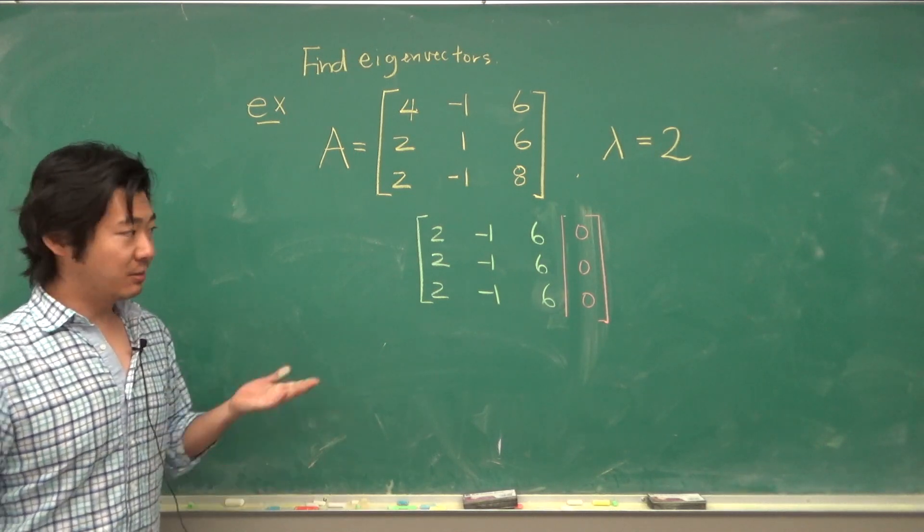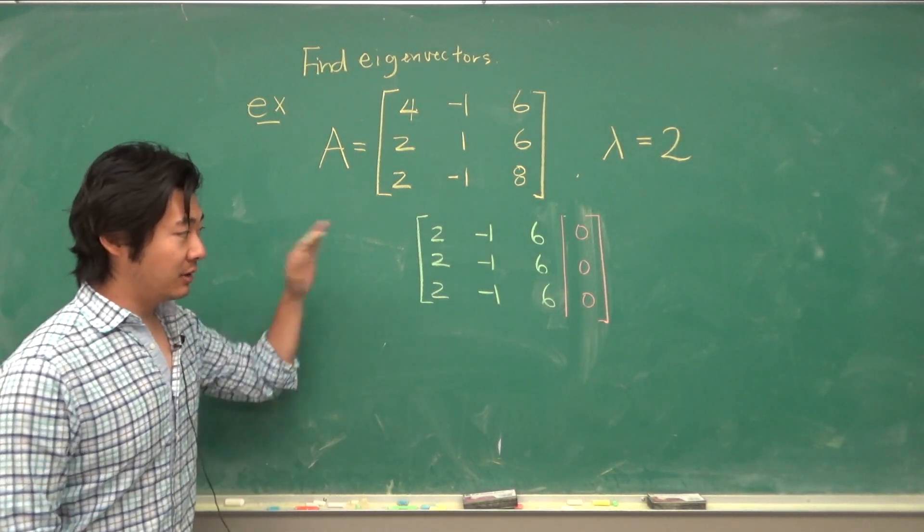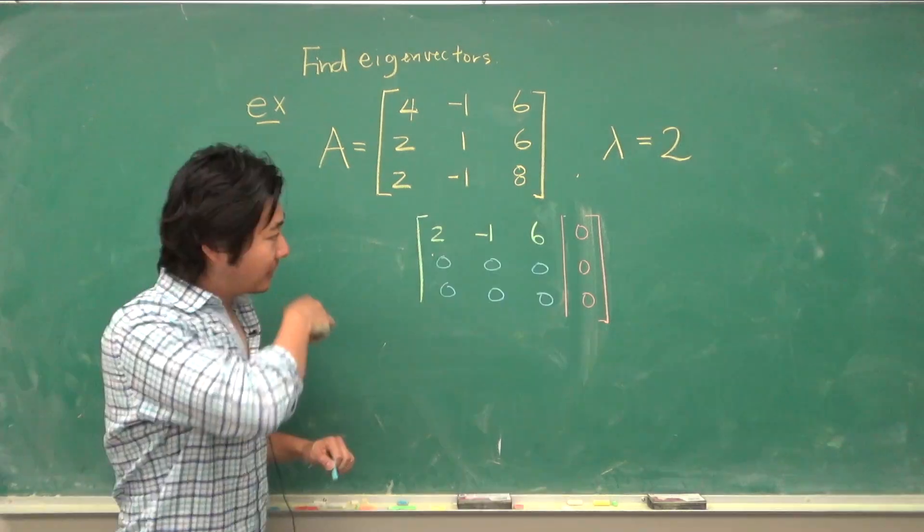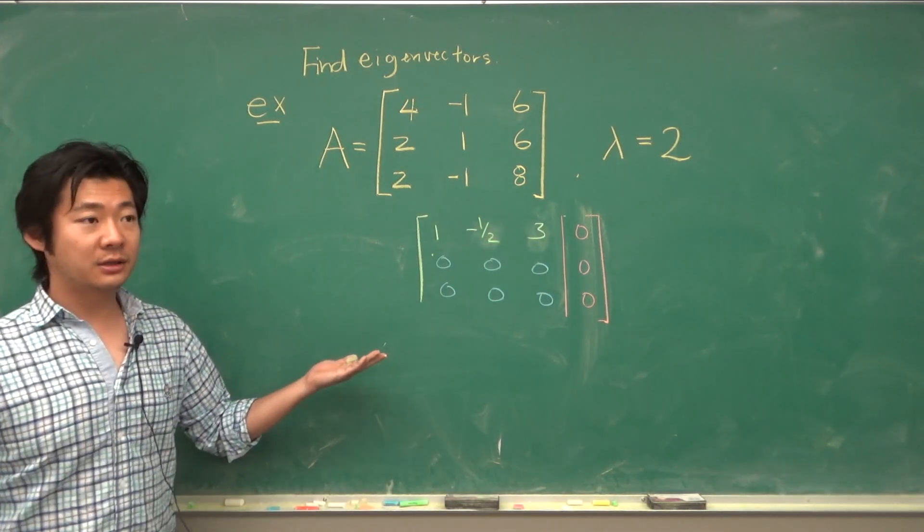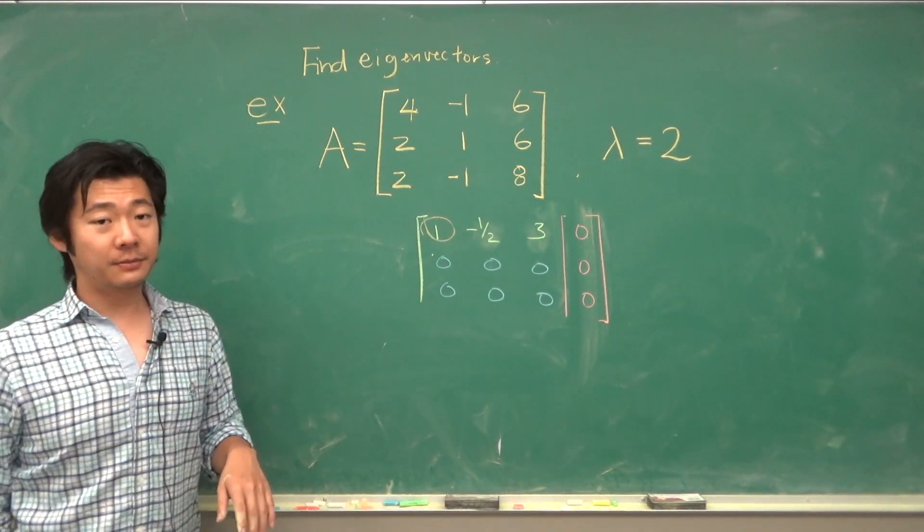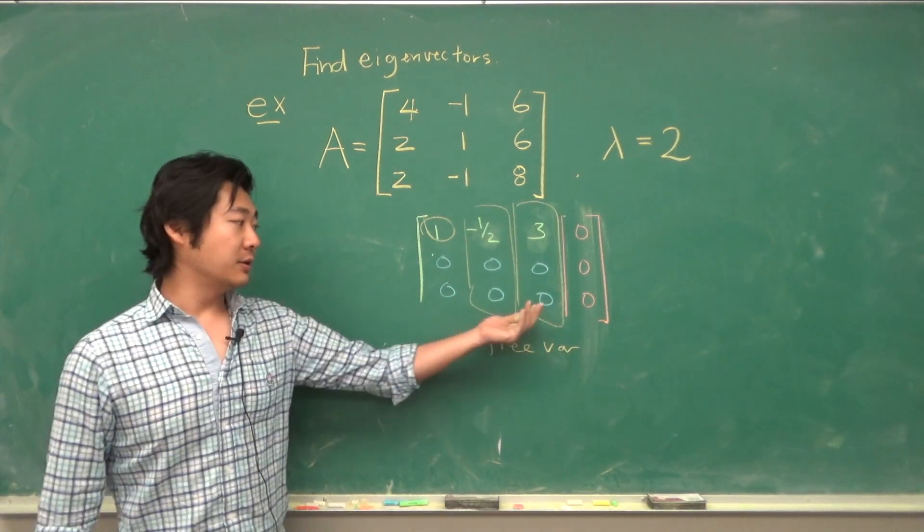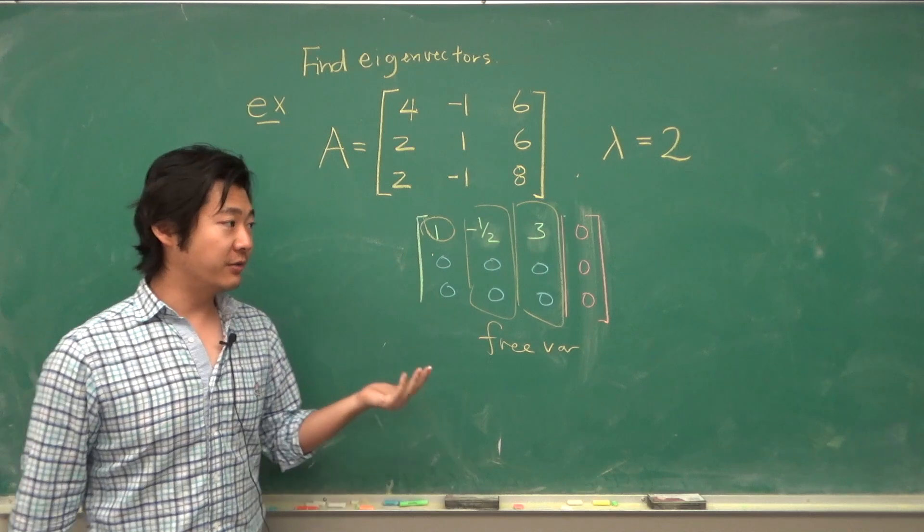Now we row reduce. It's pretty easy to see that when you row reduce, these two rows will become 0. And let's divide the first row by 2. So that's where you get this matrix. So our pivot position is here, and that's our pivot column. And these two columns would correspond to a free variable column.